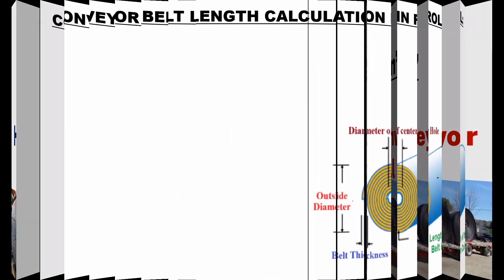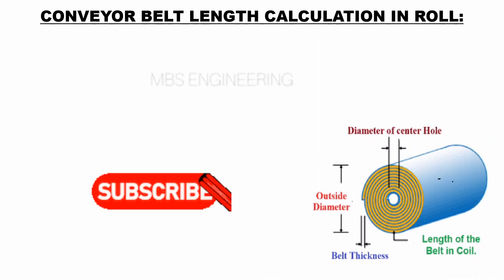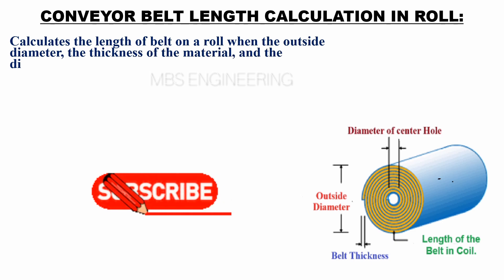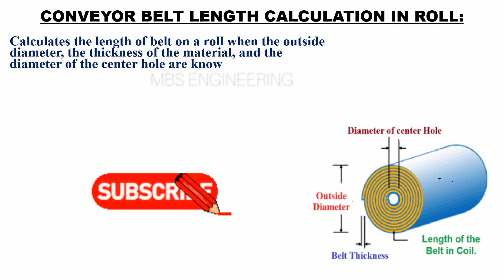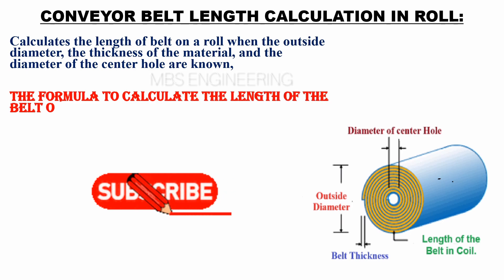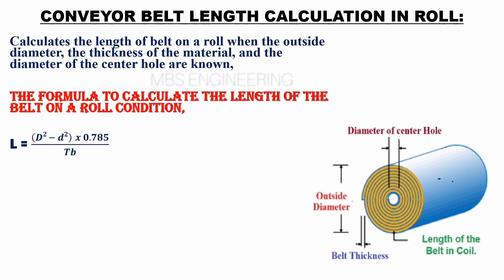We will learn the formula to calculate the length of the belt in roll. It calculates the length of the belt on a roll when the outside diameter, the thickness of the material, and the diameter of the center hole are known. The formula: the length of the belt L is equal to the square of capital D minus the square of small d, multiplied by 0.785, and then divided by Tb.